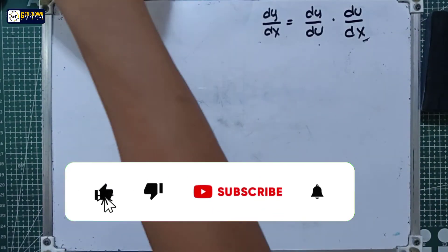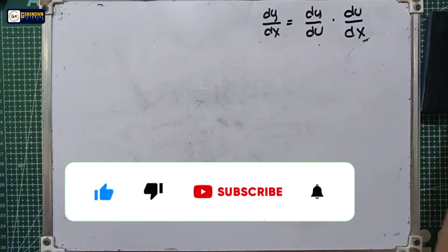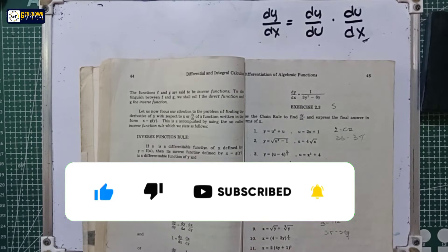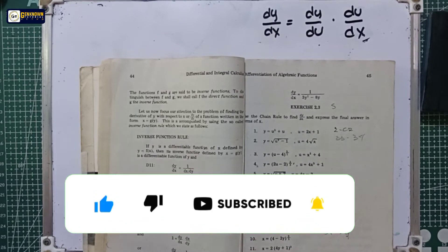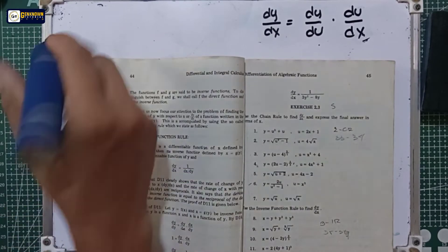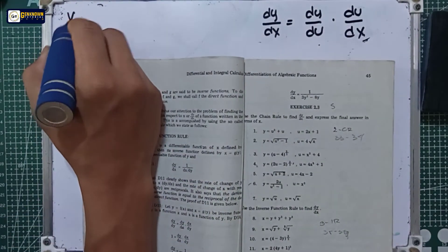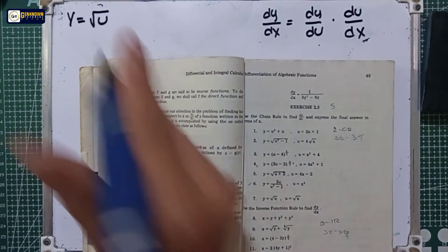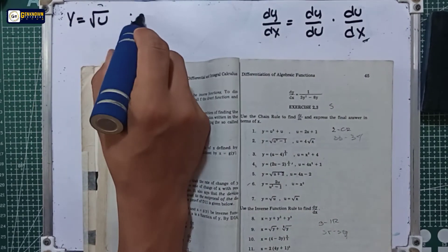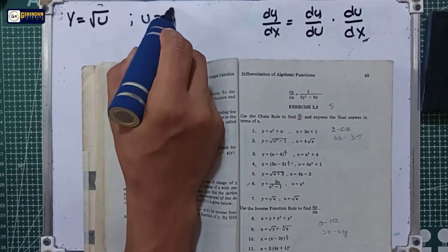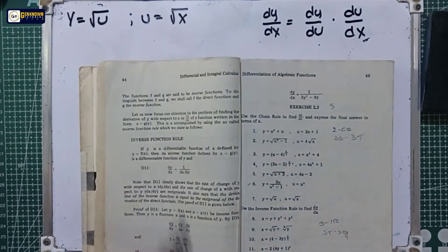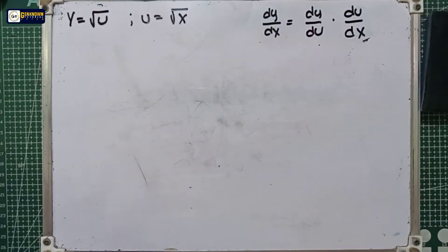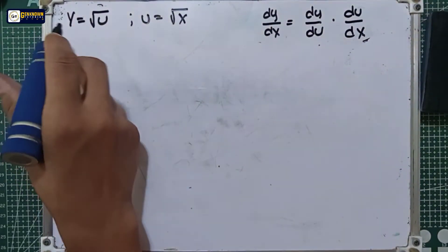We are now in the last problem of chain rule in this book — number 7. We have the equation y is equal to the square root of u, and for the u equation, we have u is equal to the square root of x.